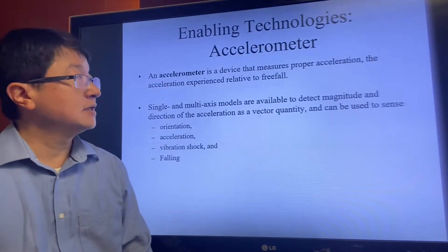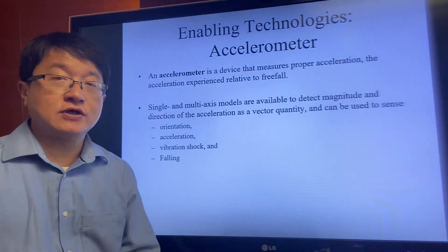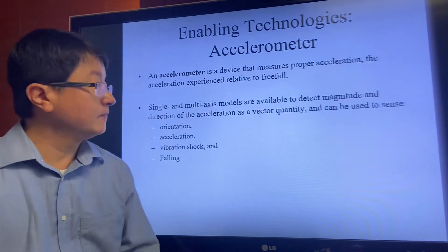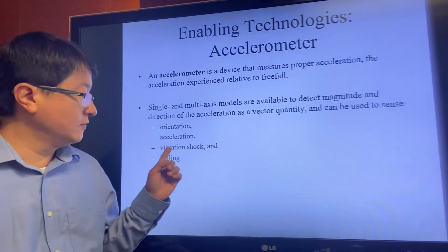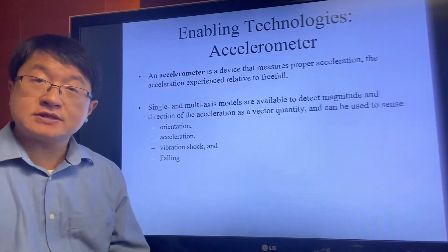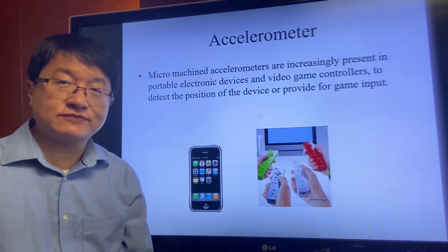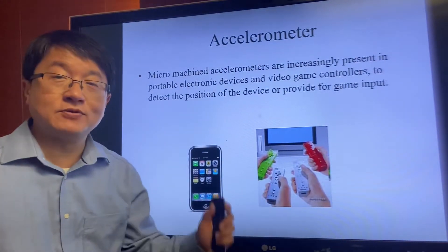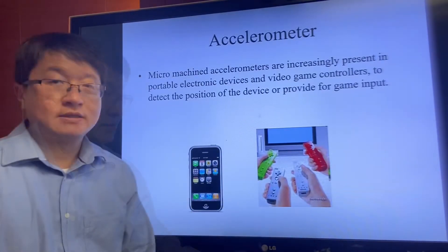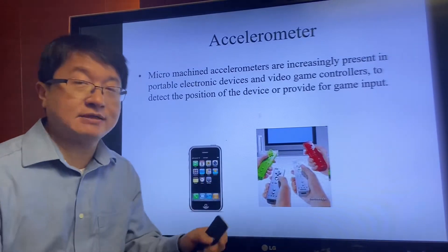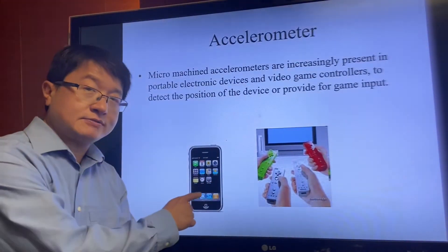Accelerometers help us to measure the orientations and the positions of your mobile phone. They can be used for orientation detection, gesture detection, vibration and shock detection, and also to detect whether your mobile phone is falling or not. Perhaps you have tried to play with a motion sensing game controller — accelerometers are built into this type of controller as well as many mobile phones nowadays.